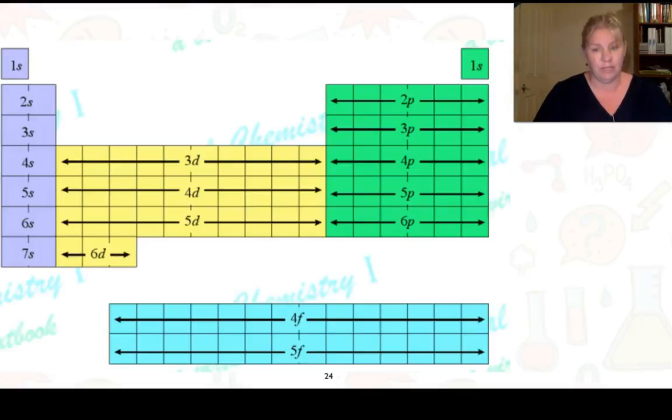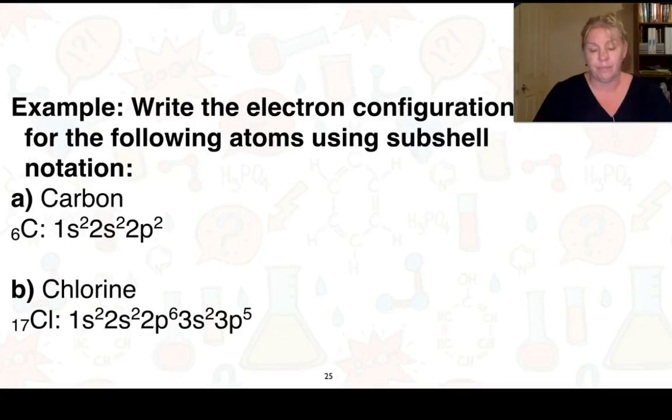This year though, we're going to use this process here. If you have a look, this is very similar to the periodic table. Well, it is the periodic table, but it's been divided up into some groups. So here we have the S, the D in yellow, the P in green, but we also have a little 1S sitting at the top here. And then we have our F group down the bottom. What we'll do is I'll show you how to get these electron configurations.